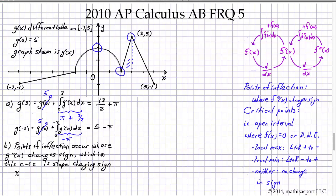At x equals 0 the slope changes sign. At x equals 2 the slope changes sign. And at x equals 3 the slope changes sign.